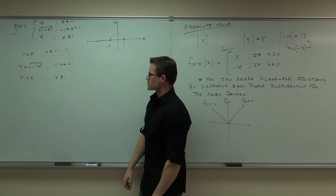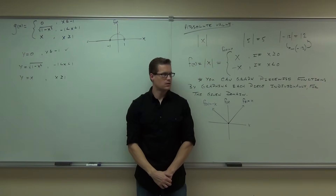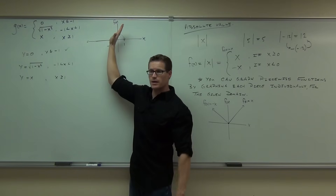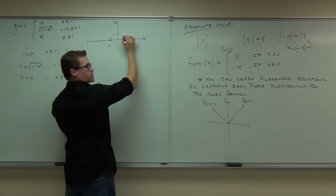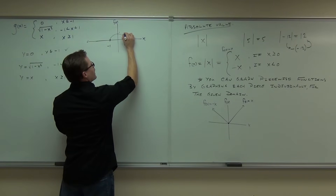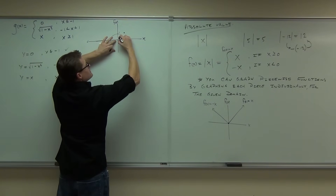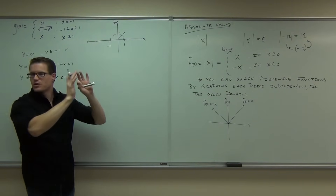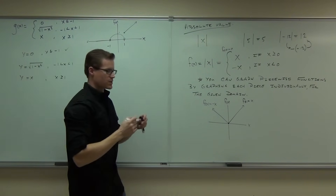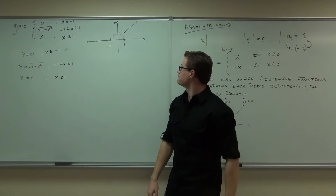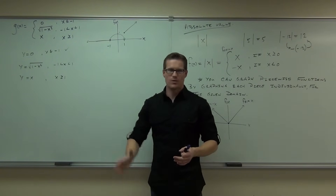The last piece is y = x for x ≥ 1. That's a diagonal line through the origin with slope 1. Normally it would go through the point (1, 1). We start at x = 1 with a solid closed dot — because there's an equals sign — then extend to the right. We erase the portion to the left because that interval is already covered by the circle piece.